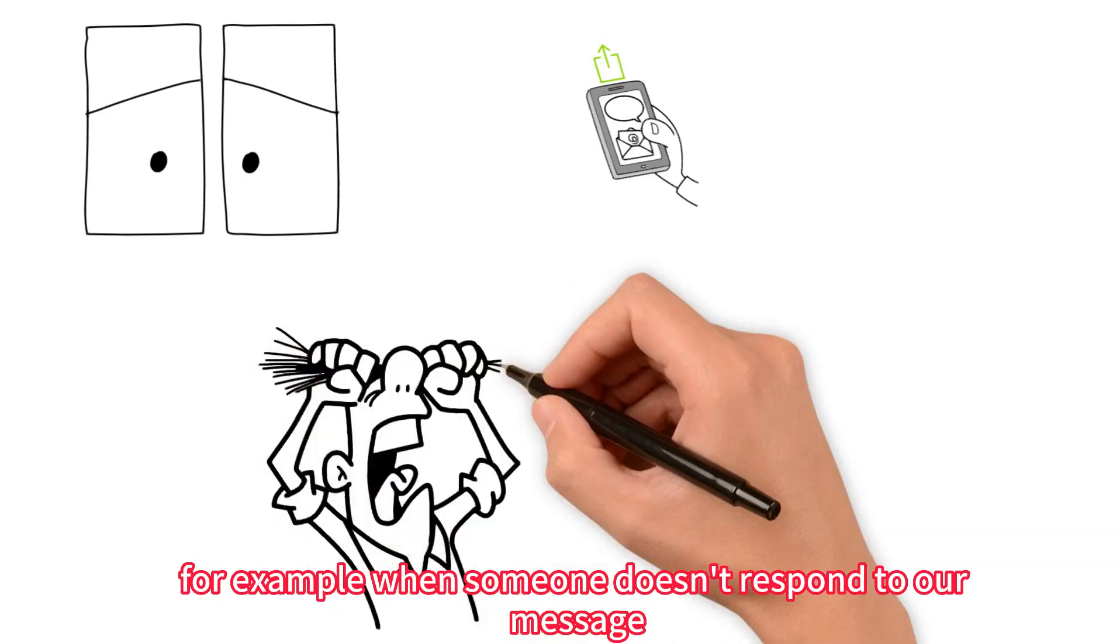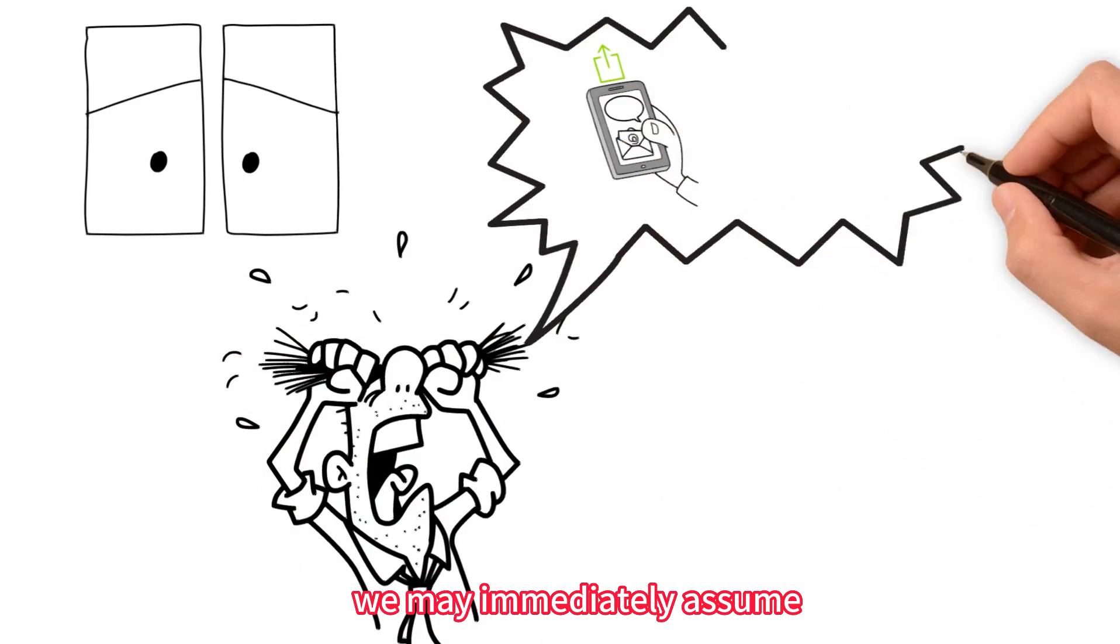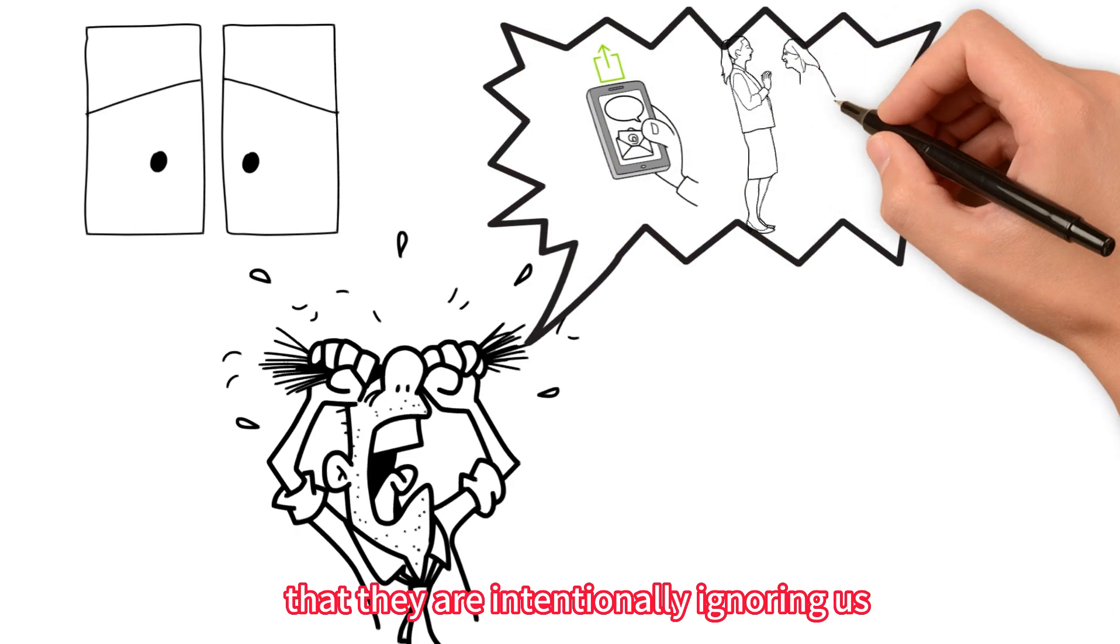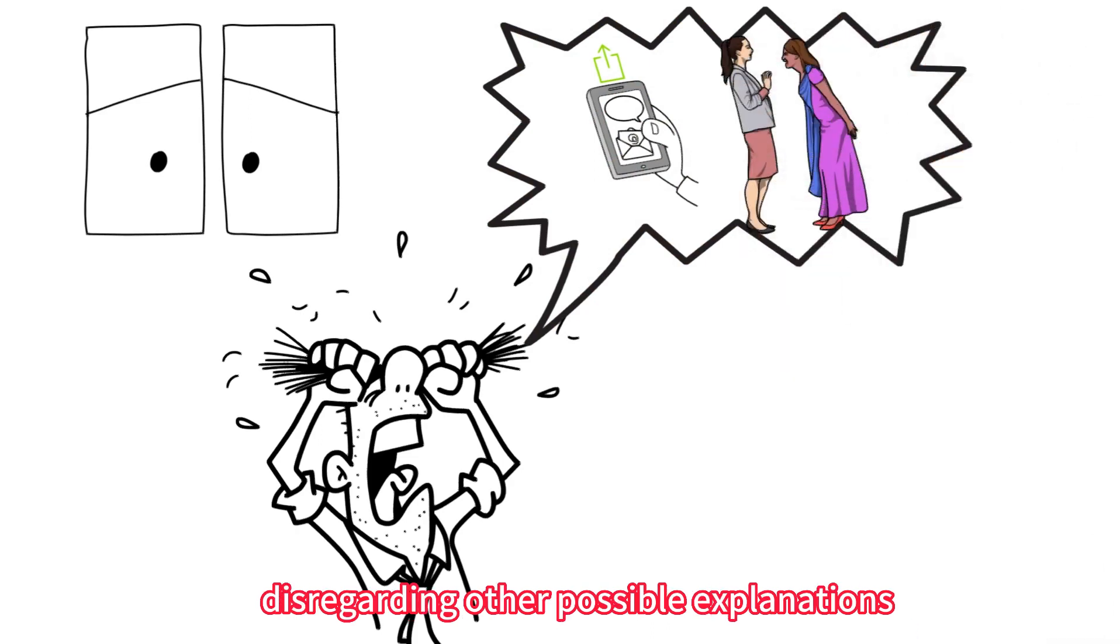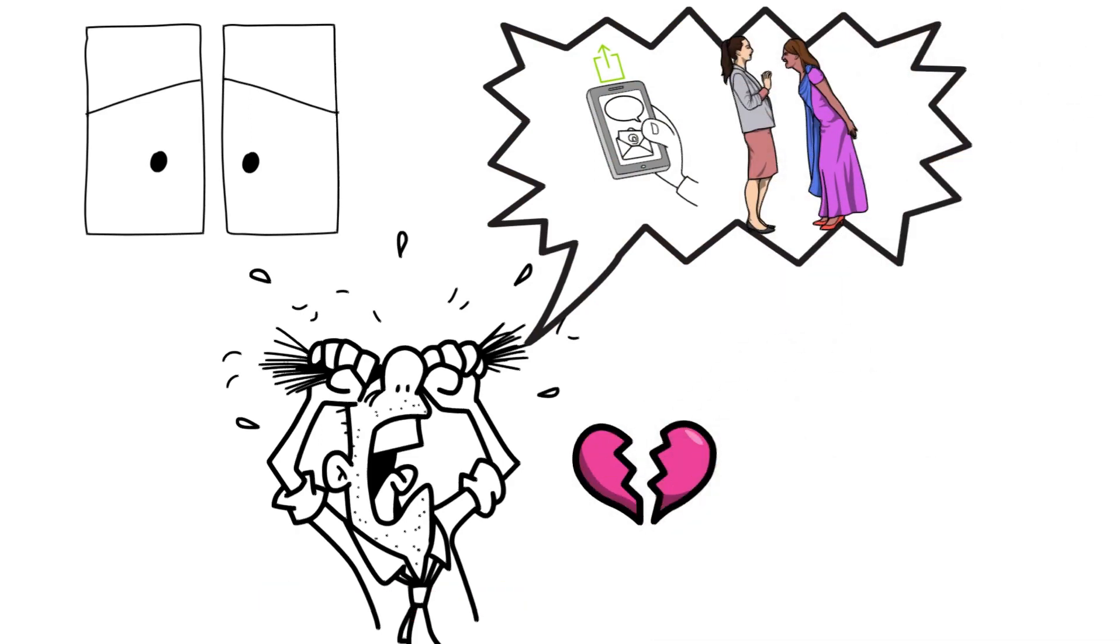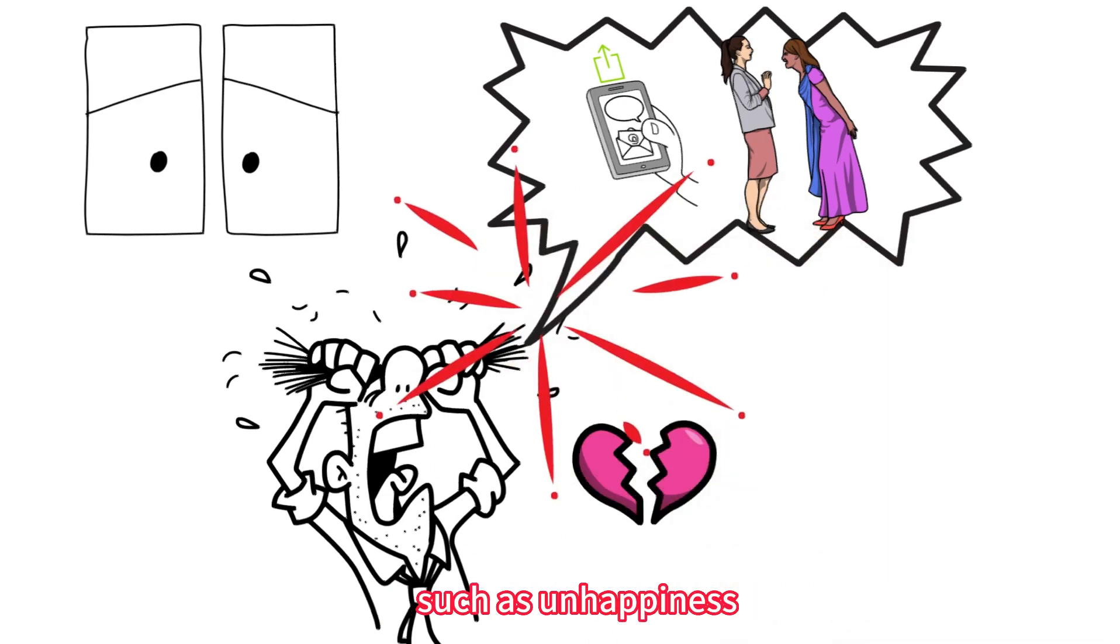this refers to our tendency to only consider the negative possibilities of a situation while ignoring the positive ones. For example, when someone doesn't respond to our message, we may immediately assume that they are intentionally ignoring us, disregarding other possible explanations. This kind of polarized thinking easily traps us in negative emotions such as unhappiness, self-blame, anger, and frustration.